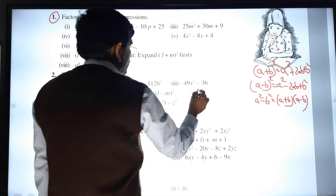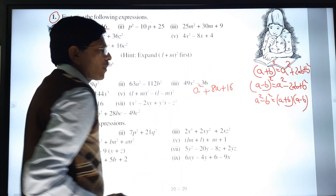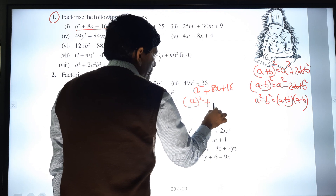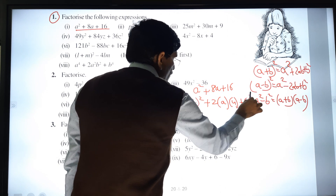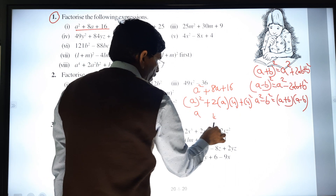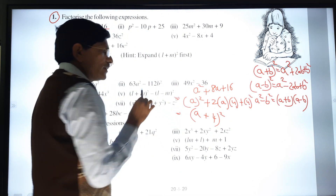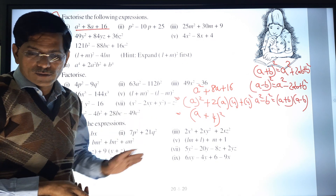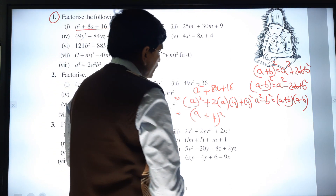First sum of Exercise 14.2 Q1: a² + 8a + 16. We know a² is a square of a, and 16 is a square of 4. So we write (a)² + 2 × a × 4 + (4)². Taking a from the first term and 4 from the last, with plus in the middle, we get (a + 4)². Within two steps we can get the answer.